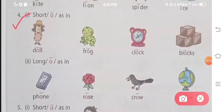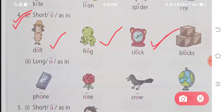Now, the next is sound of O. First we will see the short sounds of O and then we will talk about the long sounds of O. Let's read the short sounds. Doll. Doll. Frog. Frog. Clock. Clock. Blocks. Blocks. Here the O sound that came out is a very short sound.